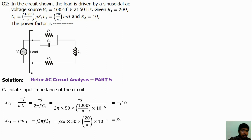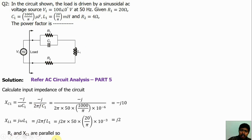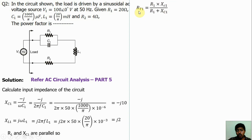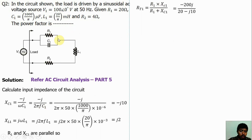Now find the input impedance. First, R1 and C1 are in parallel, meaning R1 and XC1 (capacitive reactance) are in parallel. If two components are in parallel, the formula is: RT1 equals R1 times XC1 divided by R1 plus XC1. Substituting — R1 equals 10Ω, XC1 equals minus j10 — we get minus 20j. With R1 value 10 and XC1 value minus j10, we get this result.